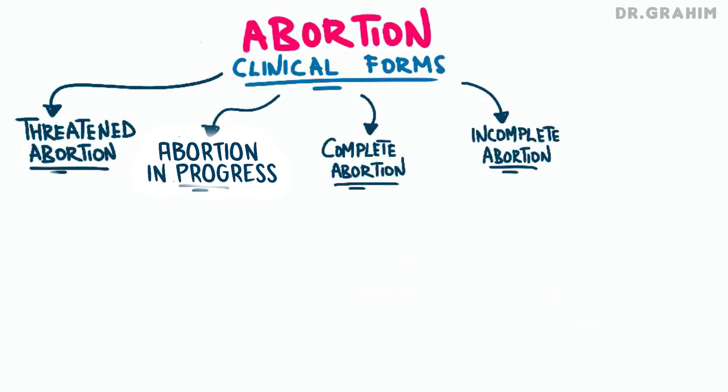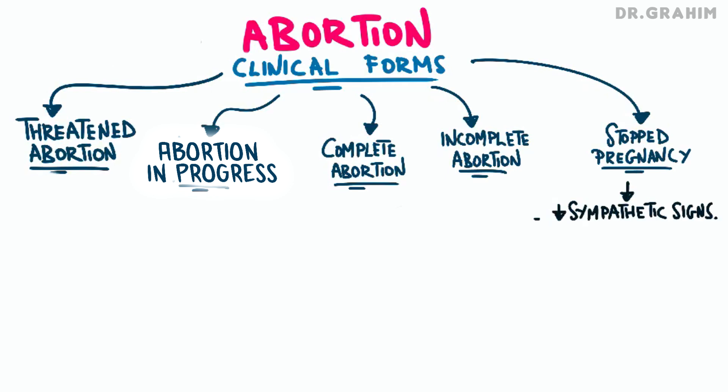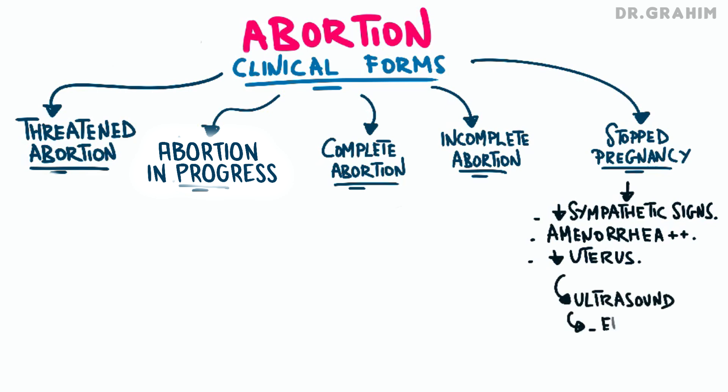The final form is a stopped pregnancy, which occurs when the embryo or fetus stops developing but remains in the uterus. Pregnancy symptoms like nausea or fatigue decrease or disappear, but amenorrhea, or the absence of menstruation, persists while the pregnancy does not progress. On clinical examination, the uterus is reduced in size as fetal development has stopped and the uterus no longer continues to grow. Pelvic ultrasound reveals the presence of an embryo at least 5 mm in size but without any cardiac activity, meaning the absence of heartbeats.